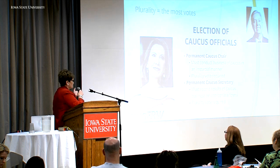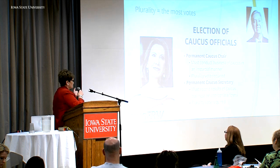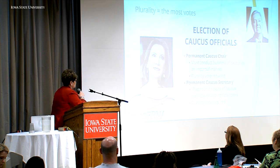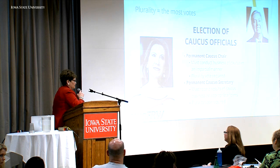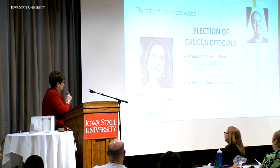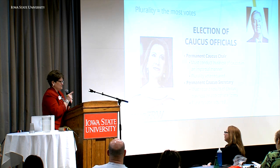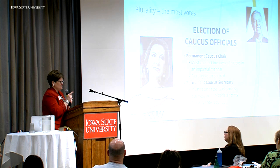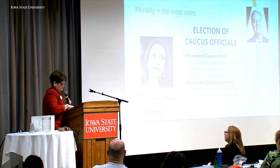Before we do official business, we need to make the temporary chair and temporary secretary permanent. The permanent caucus chair's job is to conduct the business of the caucus in an impartial manner, elected by a plurality — whoever gets the most votes becomes permanent chair. The secretary's job is to record the results of the caucus on all the appropriate forms and hopefully get the right information on the presidential straw poll results turned in correctly.